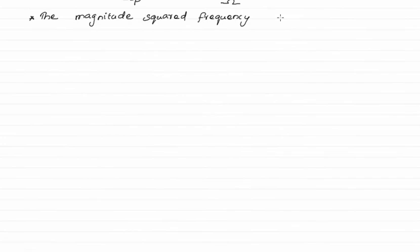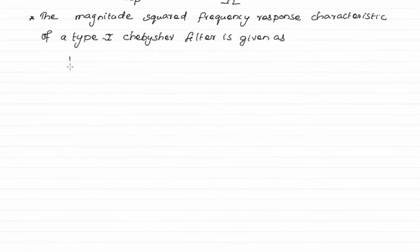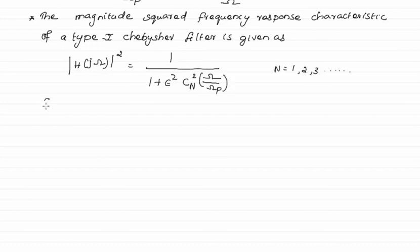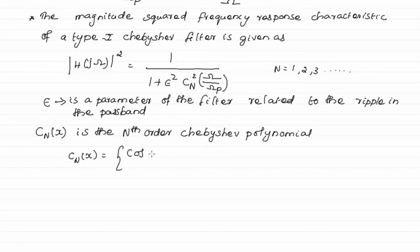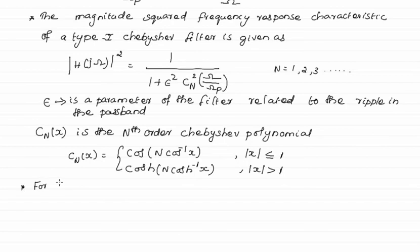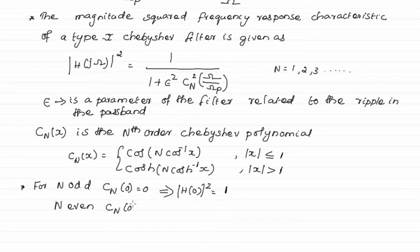The magnitude-squared frequency response of the Type-1 Chebyshev filter is defined using ε, the parameter of the filter related to the ripple in the passband, and Cn(x), the nth-order Chebyshev polynomial. For even values of n, Cn(0) equals 1, and therefore the magnitude-squared frequency response is equal to 1/(1+ε²).